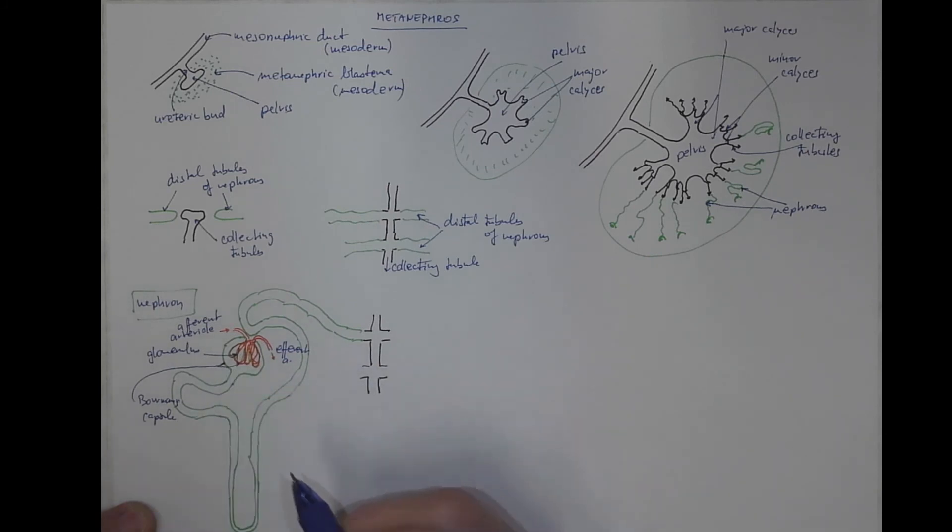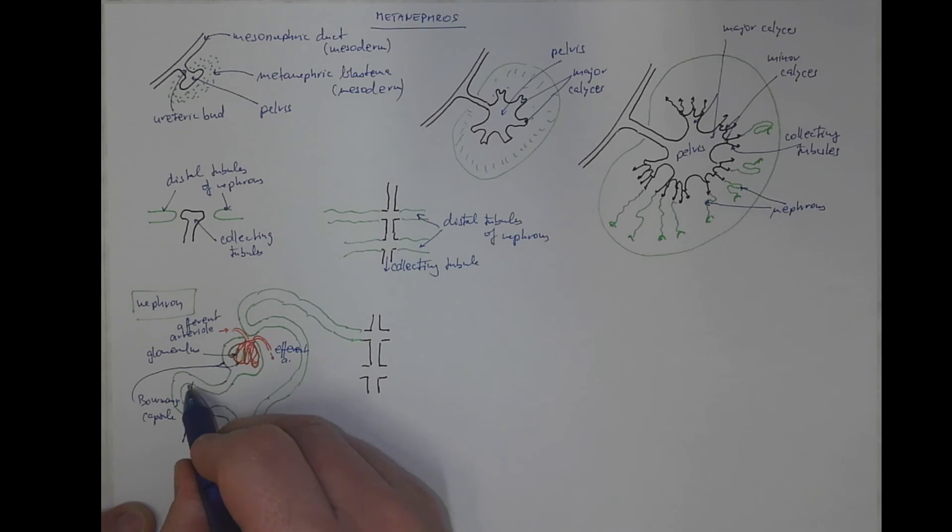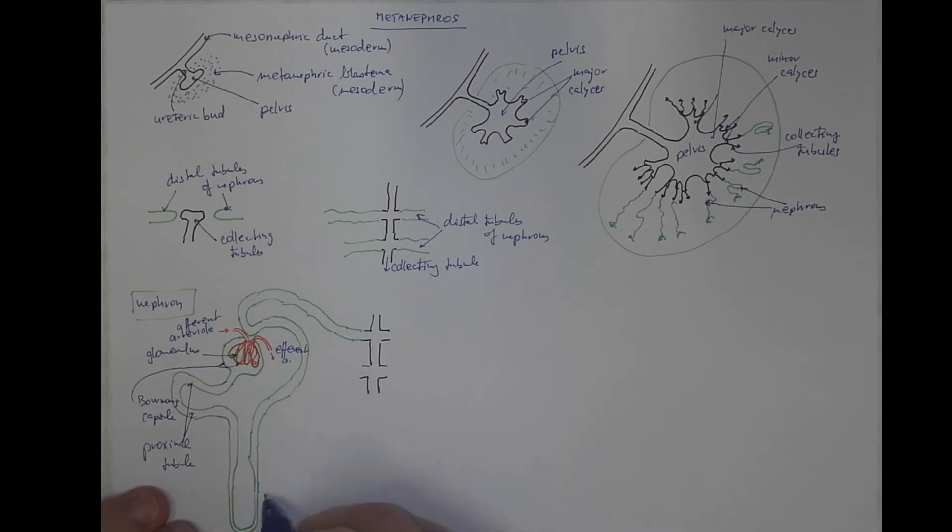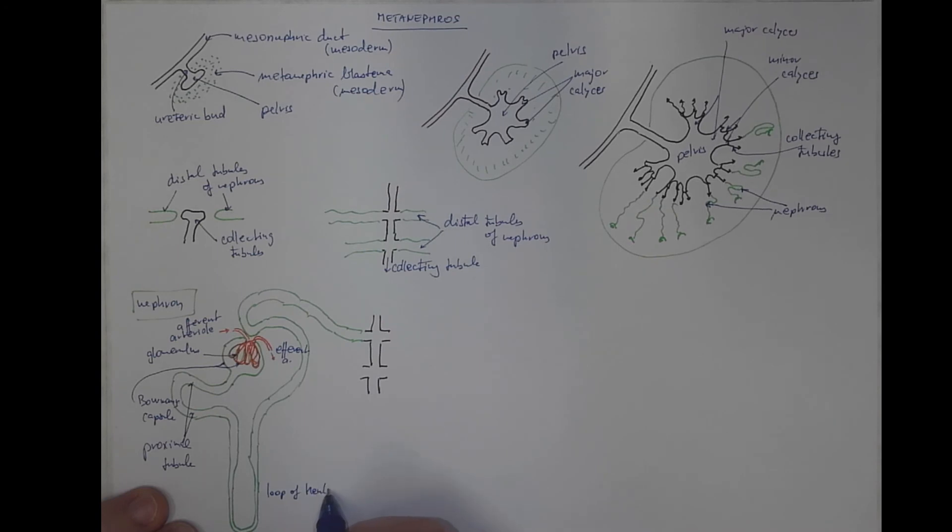...with its two layers, the proximal tubule, loop of Henle with its descending limb, ascending limb, thin segment and thick segment.